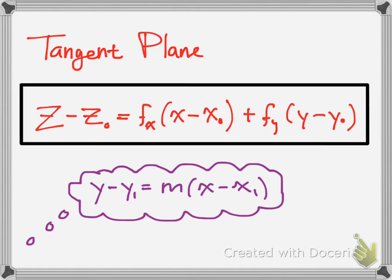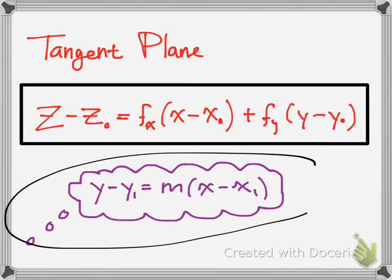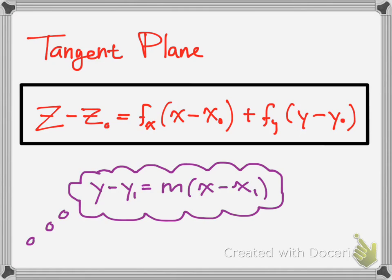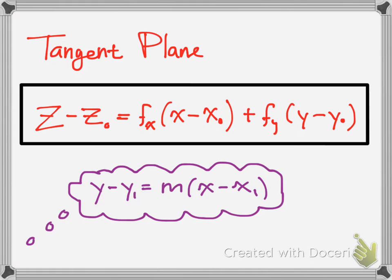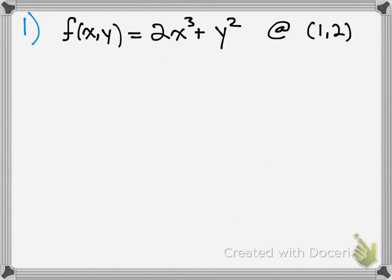For tangent planes, the key formula is shown right here. I want you to think about where that comes from. If you know point-slope form, or calculating the slope at a point like a tangent line, notice the similarities. M is slope, and the partial derivatives of x and y are also slopes — that's how you go from two-dimensional calculus to three-dimensional.